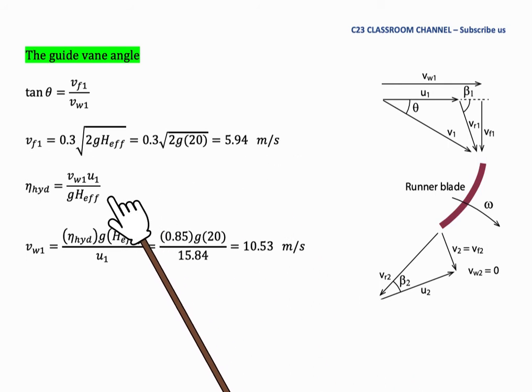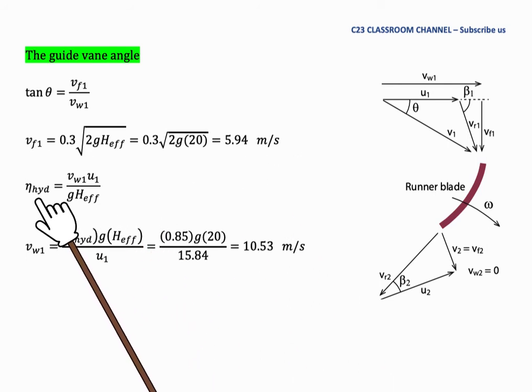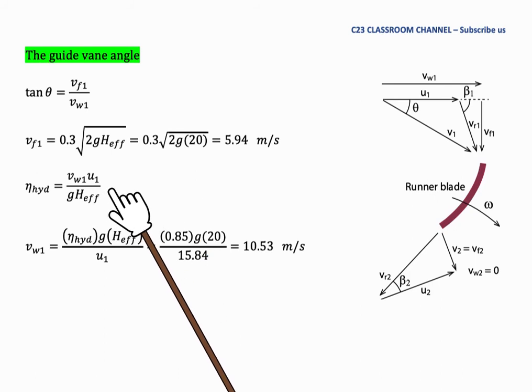From the equation of hydraulic efficiency we have this equation. We rearrange this equation to calculate Vw1 here. We substitute all the values and get Vw1 is equal to 10.53 meters per second.